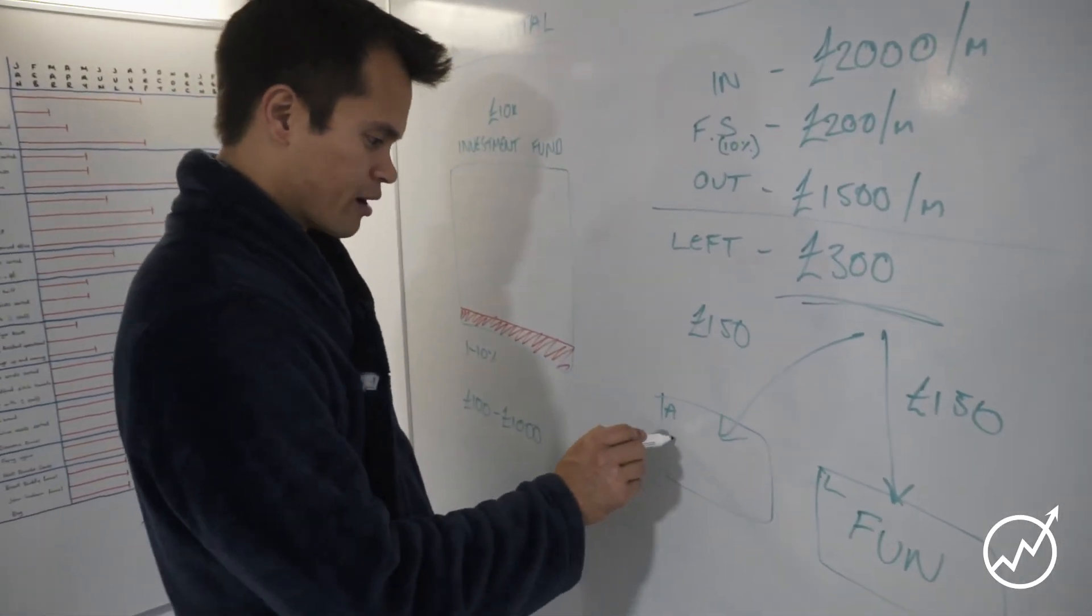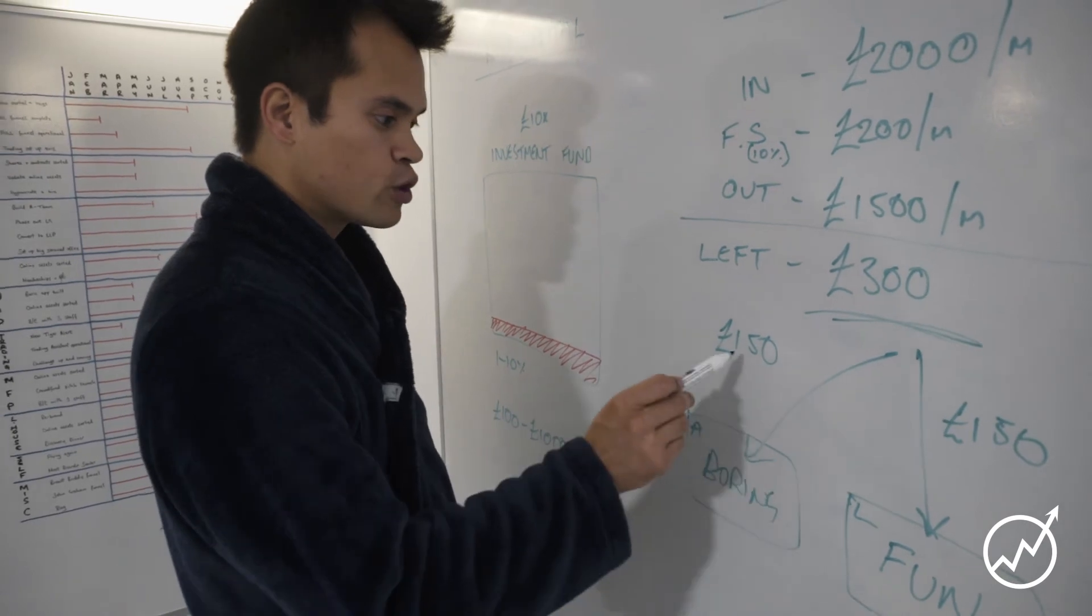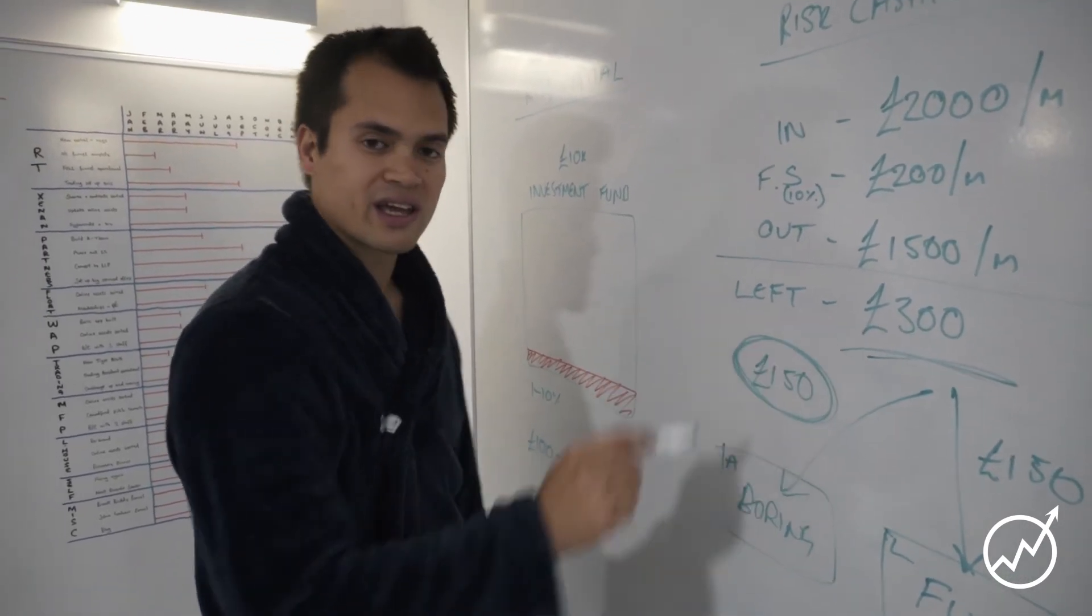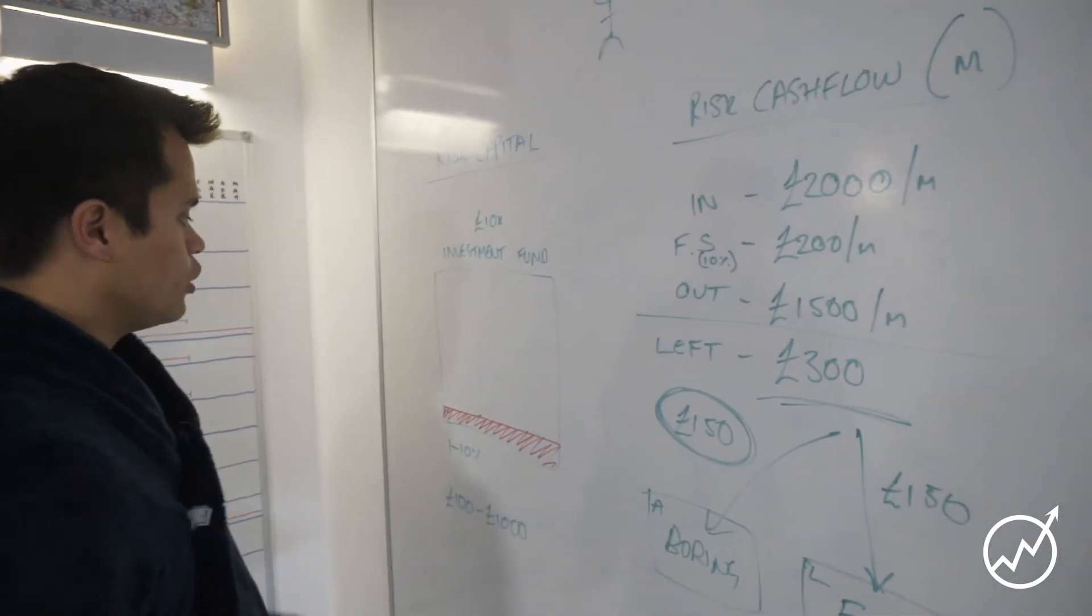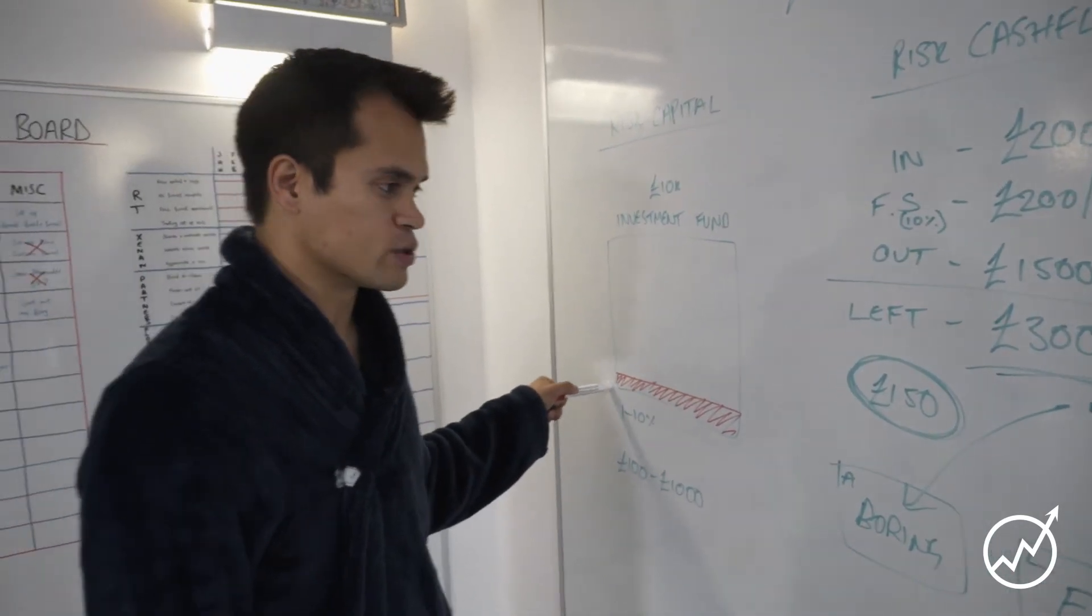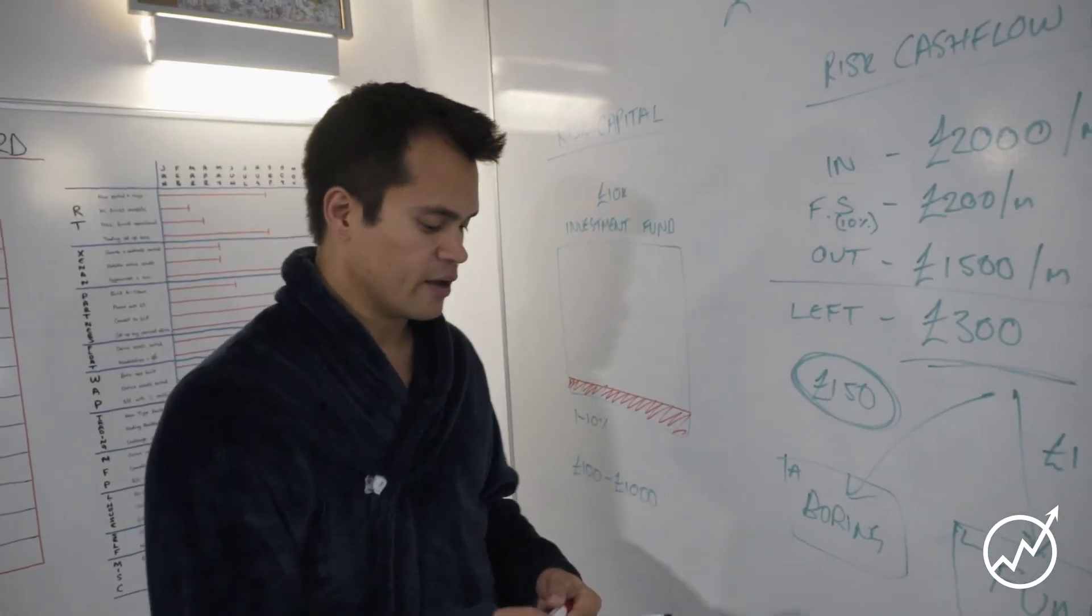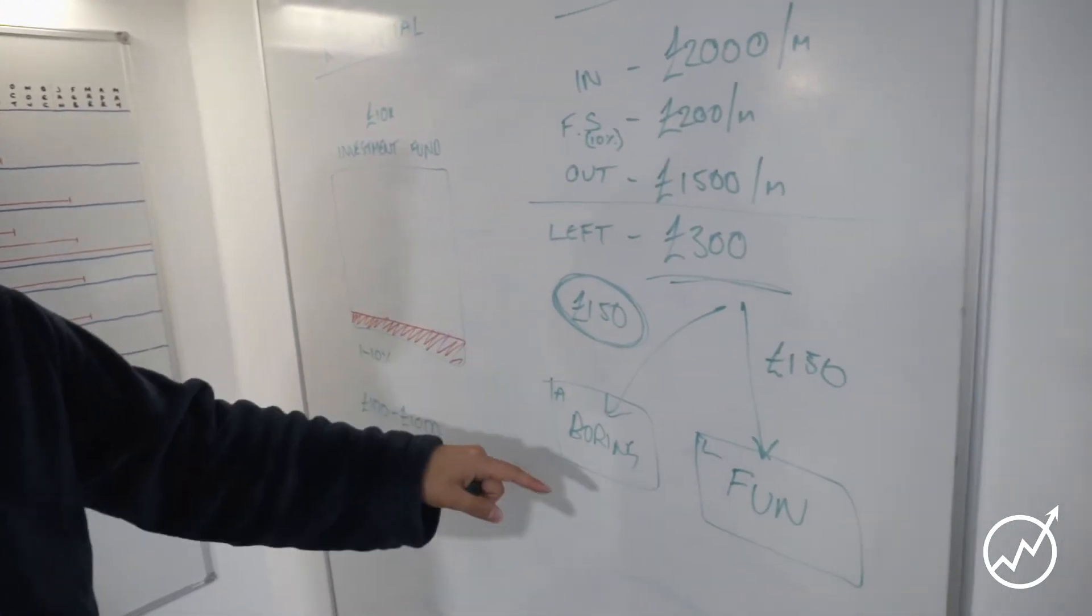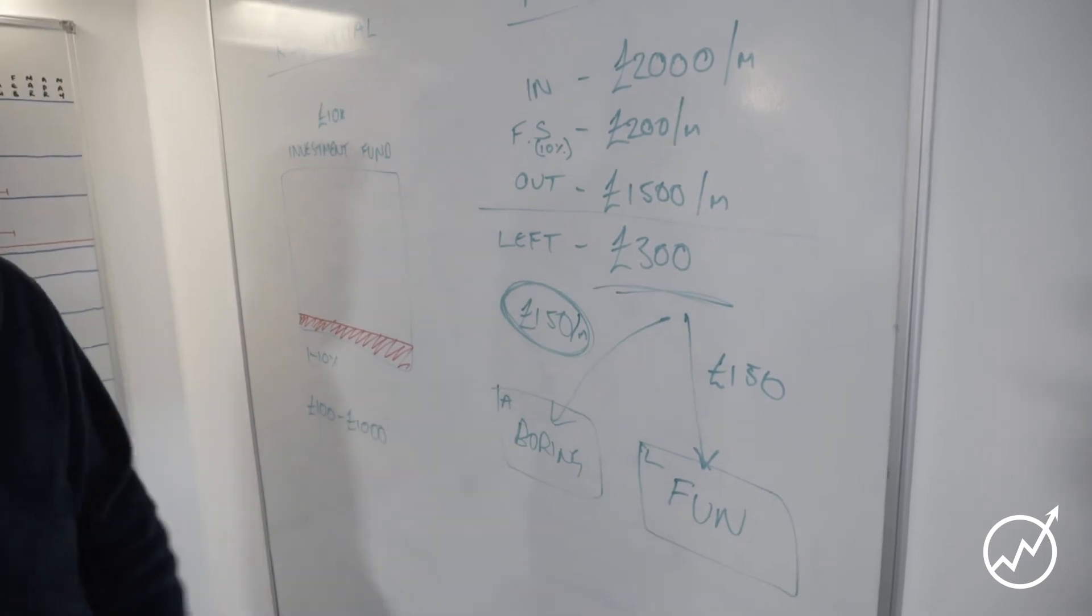And this is the boring but good box. You could, yeah, this could be your risk cash flow per month. So what you could do if you wanted is, I mean 10% of your investment fund you could be putting into risky type stuff. But if you're like me and you do like to have a little bit more exposure to stuff, you could feasibly put 150 pounds per month into your risky stuff.